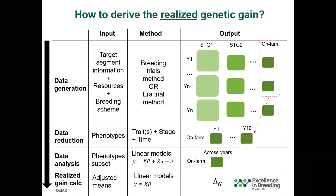It's advisable to keep the genetic gain in real units or as a percentage with respect to the original population, instead of expressing it with respect to a specific material or check, since genetic materials are environment dependent and may bias the interpretation of this metric. Some experts have referred to the fact that the rate of gain or genetic gain can only be calculated if the genetic trend is linear. That's something to keep in mind when doing this type of analysis.